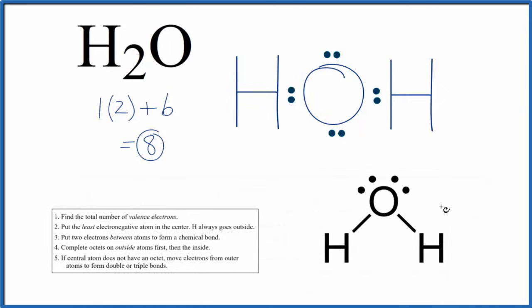Sometimes you'll see the Lewis structure drawn like this, where these lines, these are single bonds. They represent a pair of electrons. And we have a bent molecular geometry because these lone pairs, they're pushing the hydrogens down. The actual bond angle would be about 105 degrees.